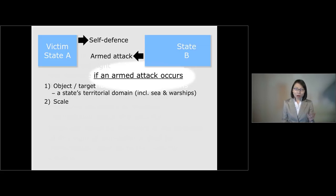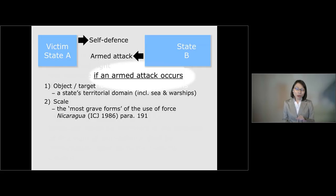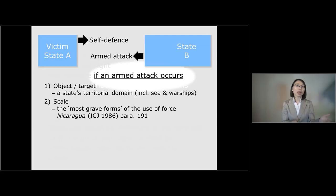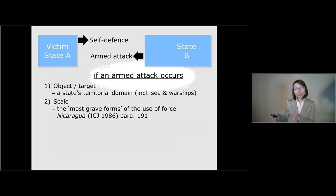Second, what kind of scale of military actions are we talking about? Does one sniper shot already constitute an armed attack for the purpose of Article 51? According to the International Court of Justice judgment in Nicaragua, the armed attack is supposed to be the most grave form of the use of force. This means there is a gap between military actions that would violate the principle of non-use of force and military actions that would constitute an armed attack for the purpose of self-defense.